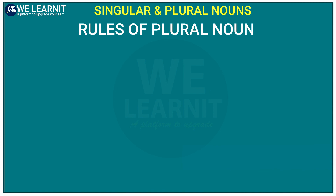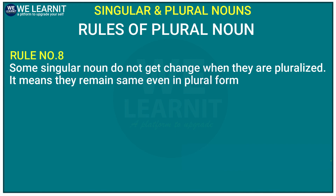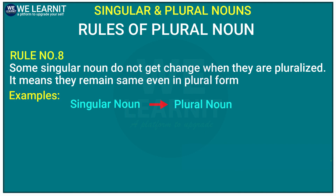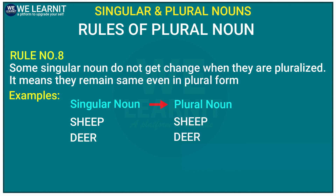Now, let's look at the eighth and last rule of plural nouns. Some singular nouns don't change when they become plural — they remain the same in plural form. For example, 'sheep' is a singular noun and its plural form is also 'sheep'. Similarly, 'deer' becomes 'deer', 'species' becomes 'species', etc.